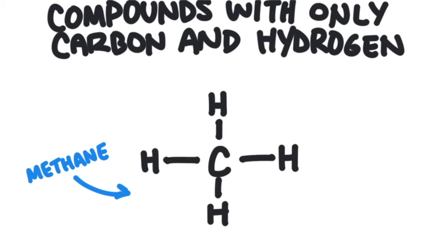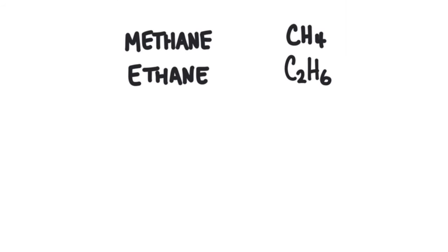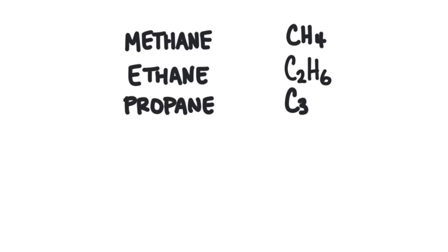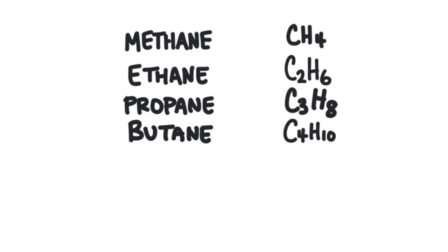The formula for methane is CH4. Ethane has two carbons linked together, with hydrogens surrounding the molecule bonding to the rest of the unpaired electrons; its formula is C2H6. Propane has three carbons linked together; its formula is C3H8. Butane has four carbons; its formula is C4H10.